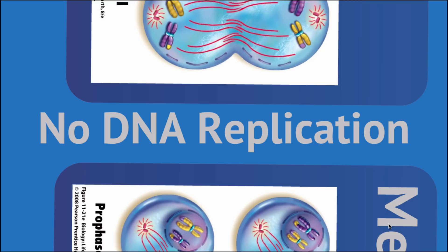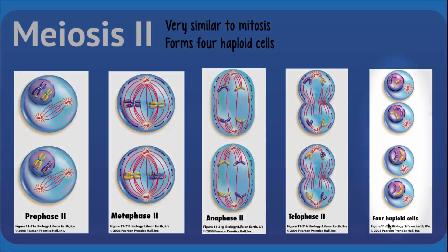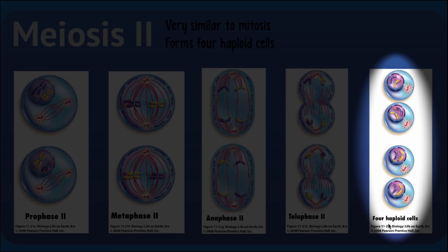There may be a very short interphase in between, but there is certainly no need for DNA replication. The steps of meiosis two are very similar to mitosis, where the chromosomes line up singly along the center of the cell and the sister chromatids are pulled apart by the spindle fibers. At the end of meiosis two, at the end of telophase, there are four genetically unique daughter cells — each of these four haploid cells is genetically unique from each other and from the parent cell.